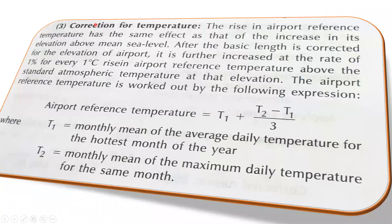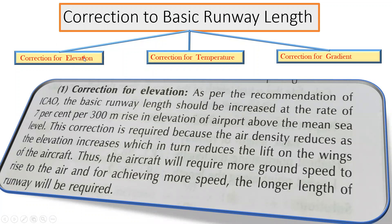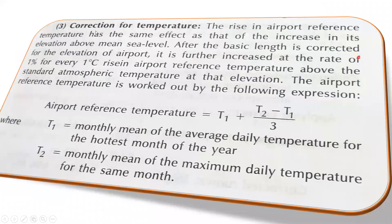The second is correction for temperature. The rise in airport reference temperature has the same effect as an increase in elevation above mean sea level. After the basic length is corrected for elevation, it is further increased at the rate of 1% for every 1 degree Celsius rise in the airport reference temperature above the standard atmospheric temperature at that elevation.